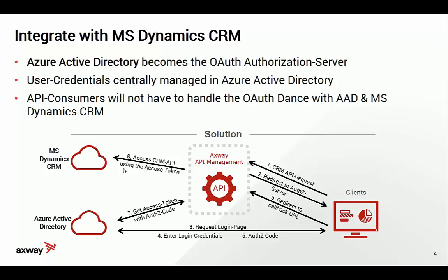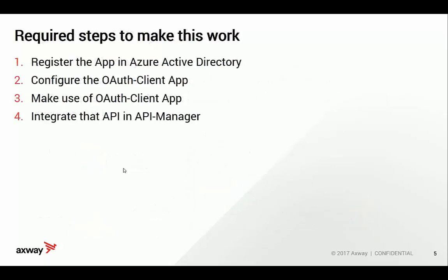This is what we would like to achieve, and to do that we need to go through a few steps. First, we have to register the OAuth application in Azure Active Directory. Second, we will configure the OAuth client application, which is basically the same thing every developer has to do when a mobile app, for instance, wants to talk to an OAuth-protected API. Then we will use that OAuth client application when communicating with the CRM API, and last but not least, we will make that API part of the API manager.